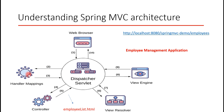In step two, the DispatcherServlet asks Handler Mapping to identify which controller is responsible for processing the request. In step three, Handler Mapping identifies the corresponding controller and sends its details back to the DispatcherServlet. In step four, the DispatcherServlet sends the request to that controller. In step five, the controller processes the request, creates a model and view — for example, loading a list of employee objects into a model — and sends a view name like an HTML Thymeleaf template or JSP along with model data back to the DispatcherServlet.